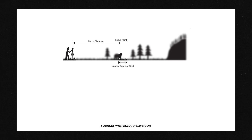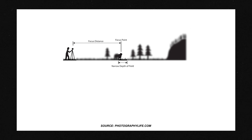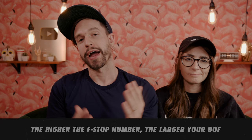Depth of field is the distance between the nearest and furthest objects in your scene that are acceptably sharp. A narrow or shallow depth of field will give just a small focal plane of sharpness, whereas a large depth of field means more of your image will be sharp. One of the main ways to adjust your depth of field is by adjusting the aperture — the lower the number, the more shallow the depth of field; the higher the number, the larger the depth of field.